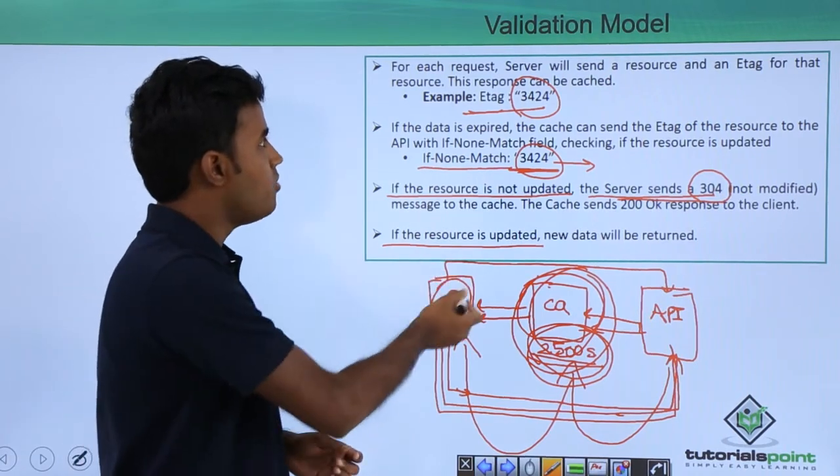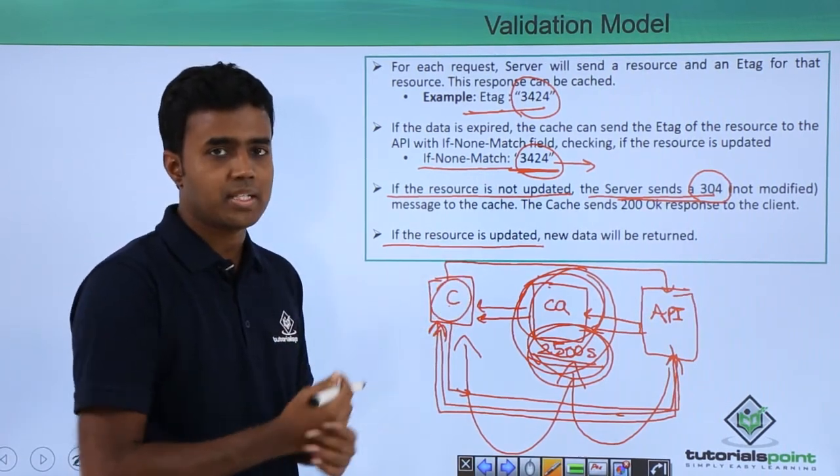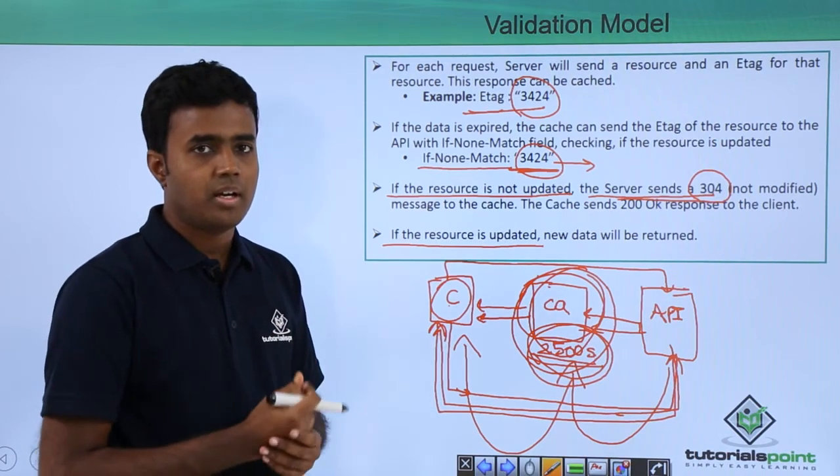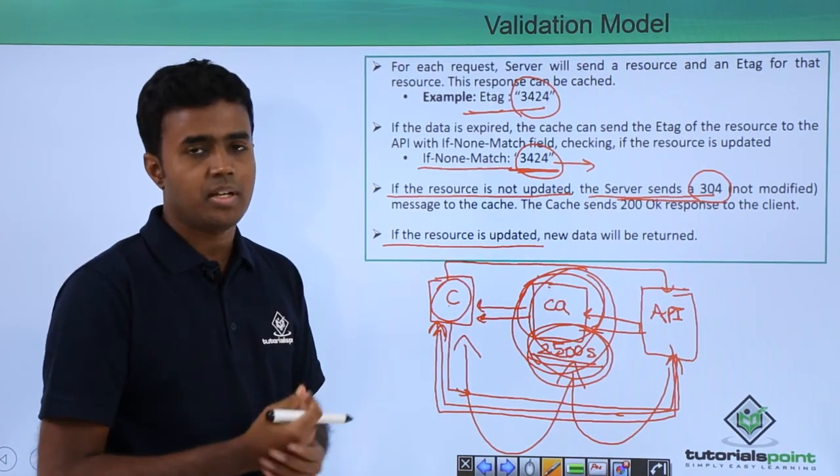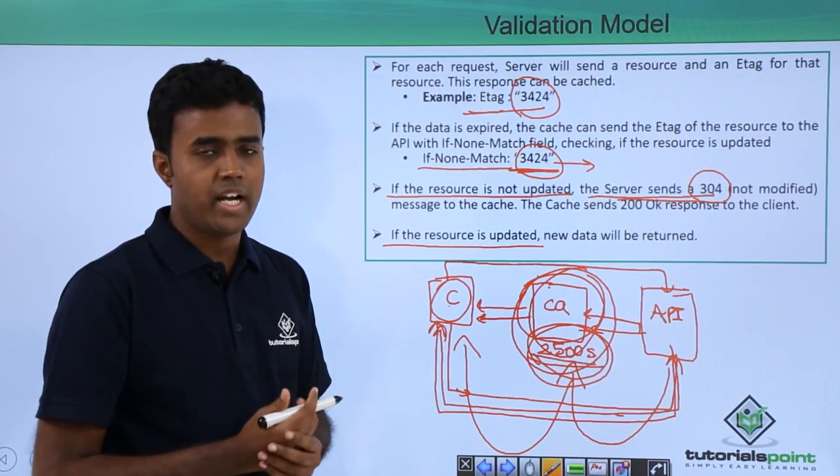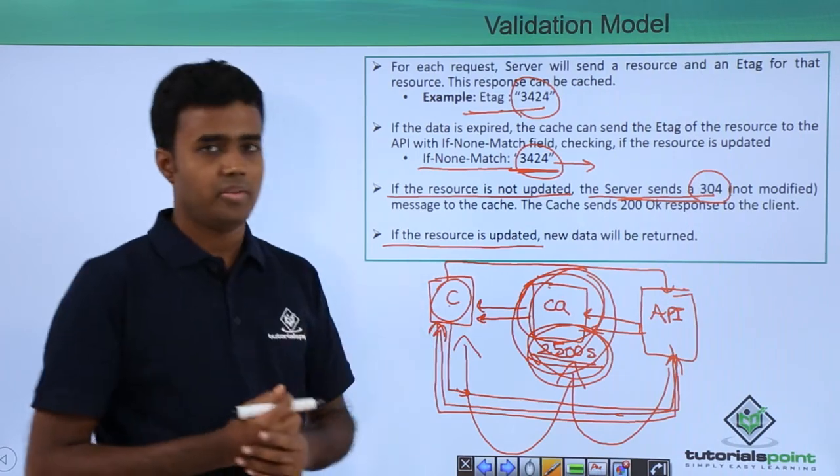So you can see how validation model helps us in avoiding a lot of network round trips and it also helps in avoiding download of data that is already served within my cache.